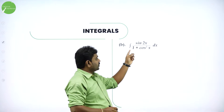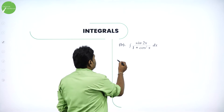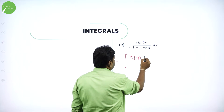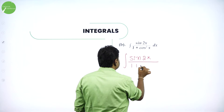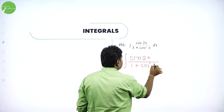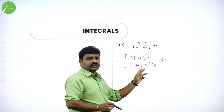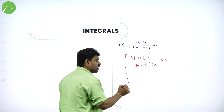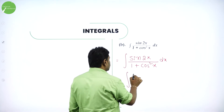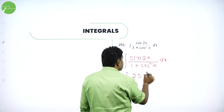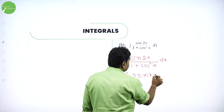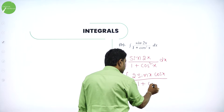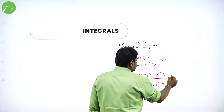Integration of sin 2x divided by 1 plus cos square x dx. So, the given problem I can write it as integration of sin 2x divided by 1 plus cos square x dx. All of you know, differentiation of cos is minus sin. But numerator is sin 2. Use sin 2 theta. In multiple angles of trigonometry, sin 2 theta can be written as 2 sin theta cos theta. So, sin 2x can be written as 2 sin x cos x, divided by 1 plus cos square x.